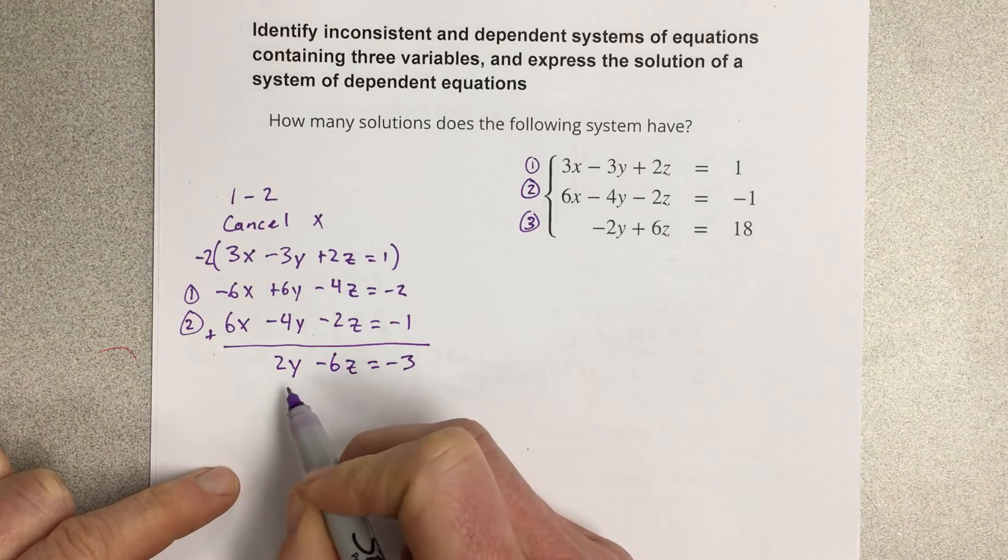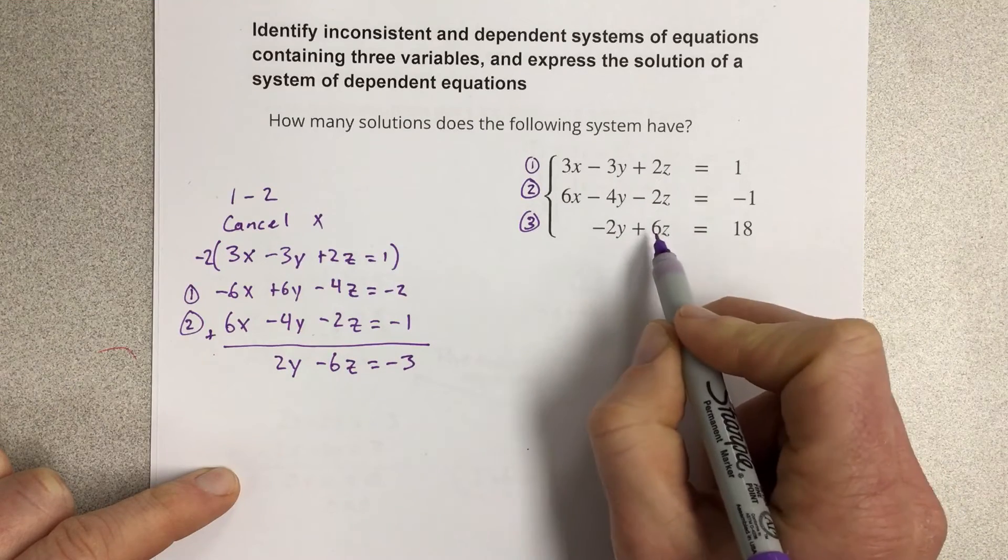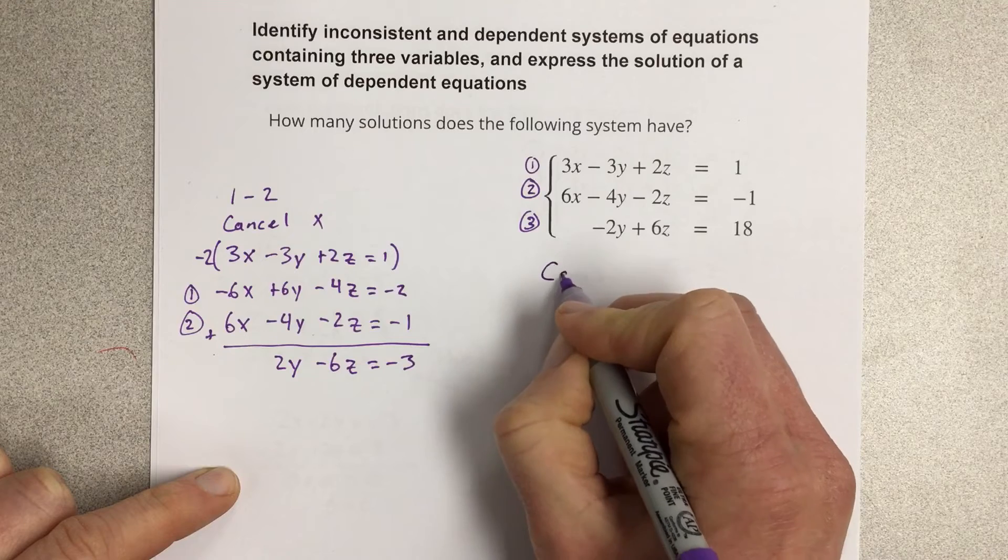We're going to now take this equation and combine it with the third equation here and let's cancel the y value.